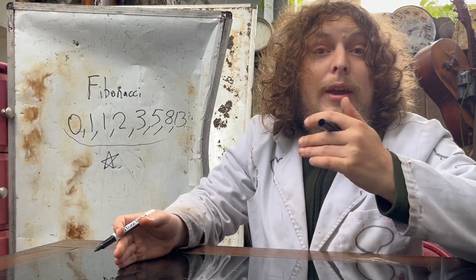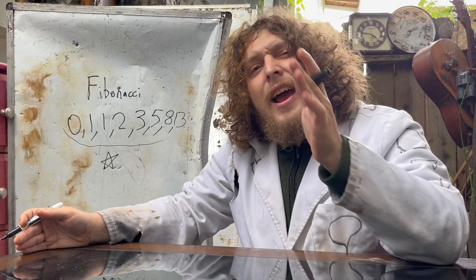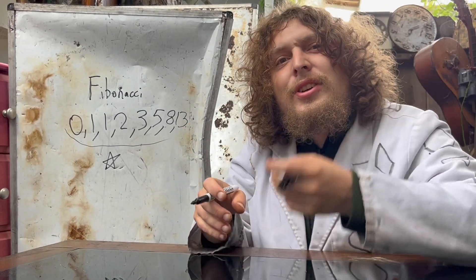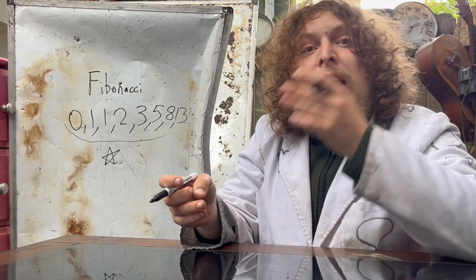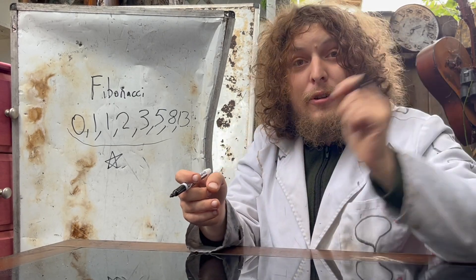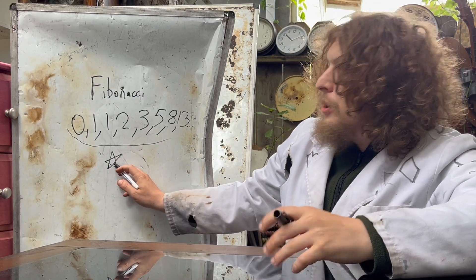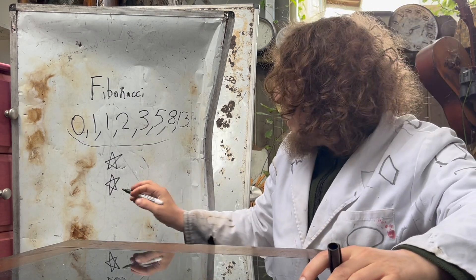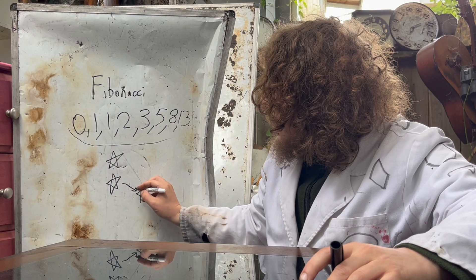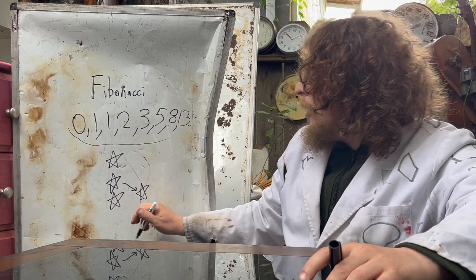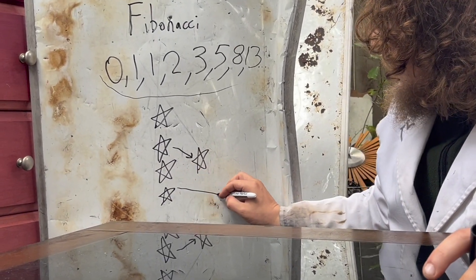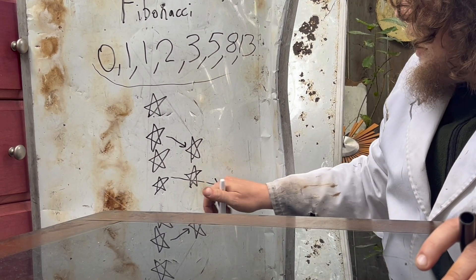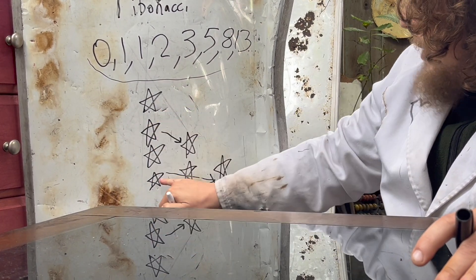If a new pair has just been born, it will take them one month before they mate, and then one more month before they give birth. Every future month after that, they will be giving birth to a new single pair. Essentially, these rabbits live forever, and on the second month onward after their birth, they will create a new pair. On the first month, we just have that original pair. On the second month, it's still just the same pair — they will have mated at that point, but they won't have their new baby until month three. Then on month four, they're still around and having another new baby, plus that first baby pair is still around and has mated for the first time, although it has not had its own kid yet.